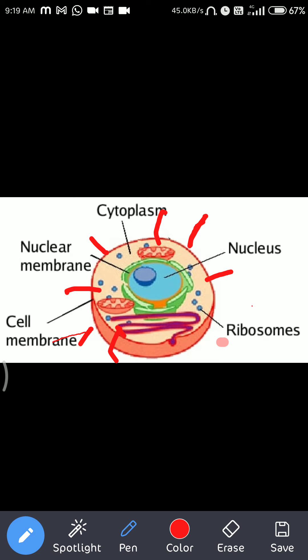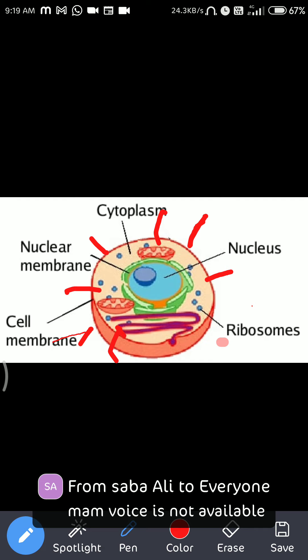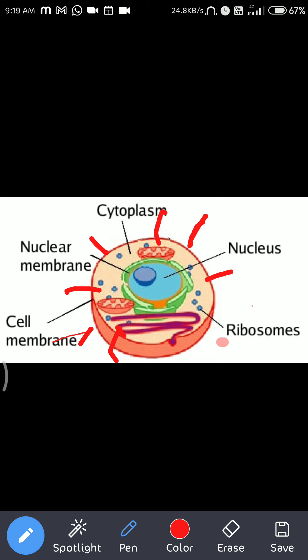Cell membrane properties: it is living, it is elastic or flexible, it has pores, and it allows only the few substances needed for the survival and functioning of the cell. As a result of metabolic activity, some excretory substances are formed inside the cell that have to be removed. Some substances formed in the cell need to be transported to nearby cells. The cell membrane knows by default which substance has to go out and which needs to enter.